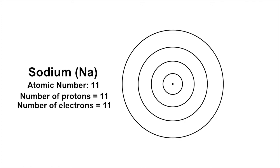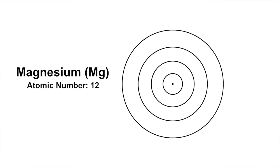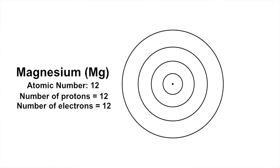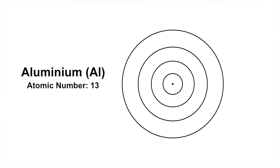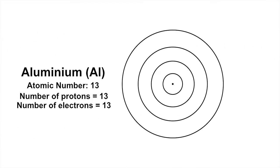Sodium has two in the first shell, eight in the second shell, and one in the third shell. Aluminium has 13 electrons, two in the first shell, eight in the second shell, and three in the third shell.